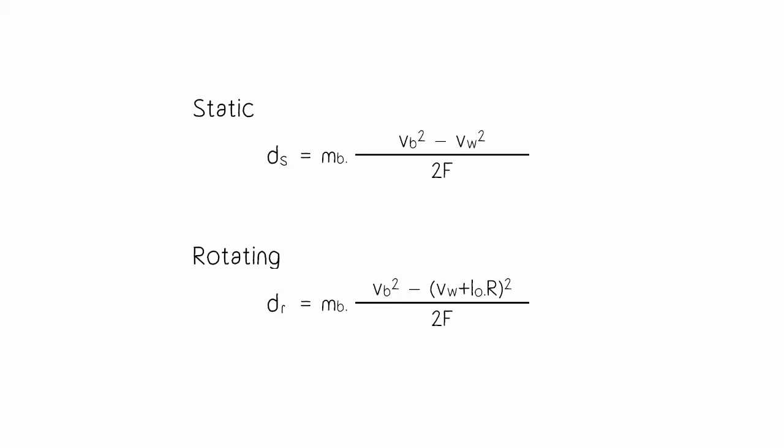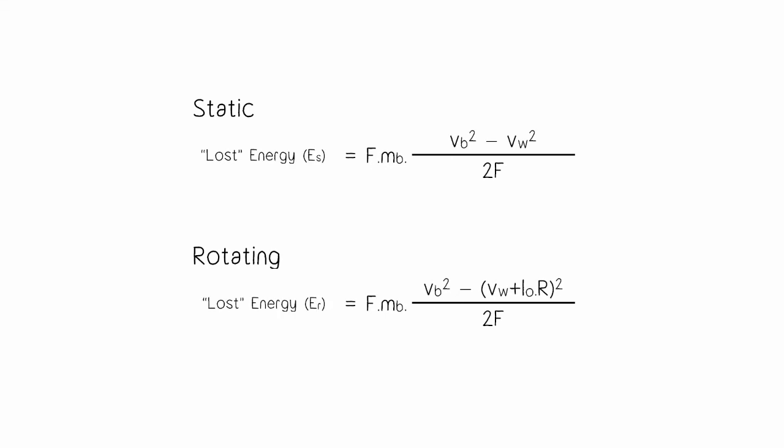In the rotating case, U has an extra term, so Vb minus U is a smaller value. Since everything else in the equations is the same, DR must therefore be less than DS — the bullet penetrates less far into the rotating block. Putting this into the energy equation, the lost energy is also less for the rotating block. Crucially, F appears both multiplied and divided, so the F terms cancel out entirely. This proves that less energy is lost in the rotating block.